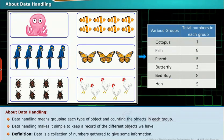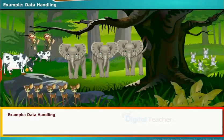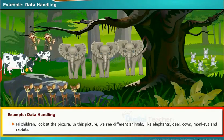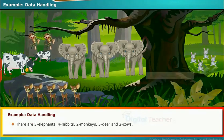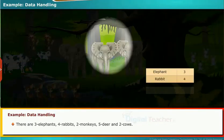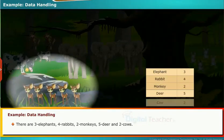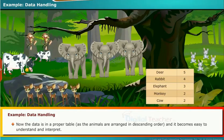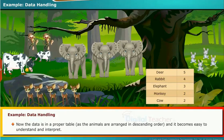Definition: Data is a collection of numbers gathered to give some information. For example, look at the picture — we see different animals like elephants, deer, cows, monkeys, and rabbits. There are three elephants, four rabbits, two monkeys, five deer, and two cows. These are arranged in descending order in a proper table.